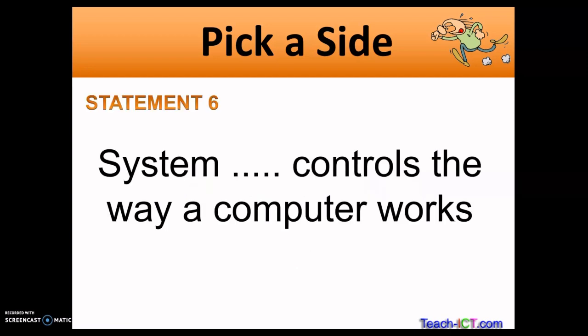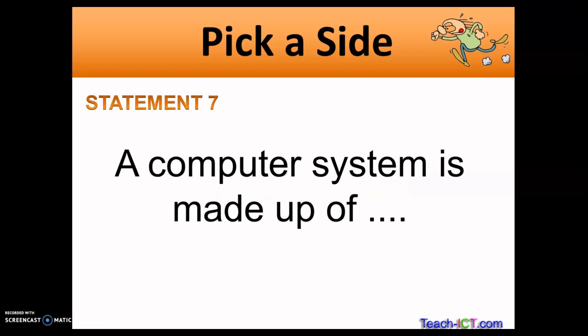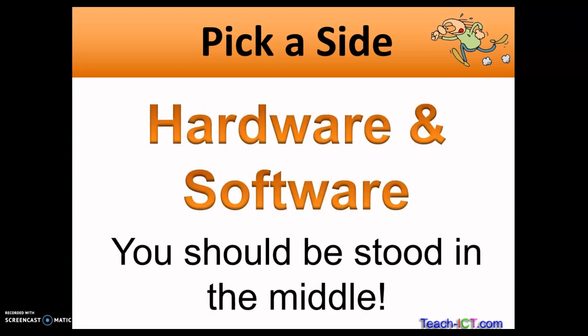Statement six: System something controls the way a computer works. So is it hardware or is it software? Is it system hardware or system software? Software, well done. Statement seven: The computer is made up of what? I'm going to throw something in here. Is it hardware, is it software, or is it both? I'm going to let you decide, then I'm going to show the answer. Five, four, three, two, one - it's hardware and software. Okay, you should be stood in the middle of the room, well that's up to you.